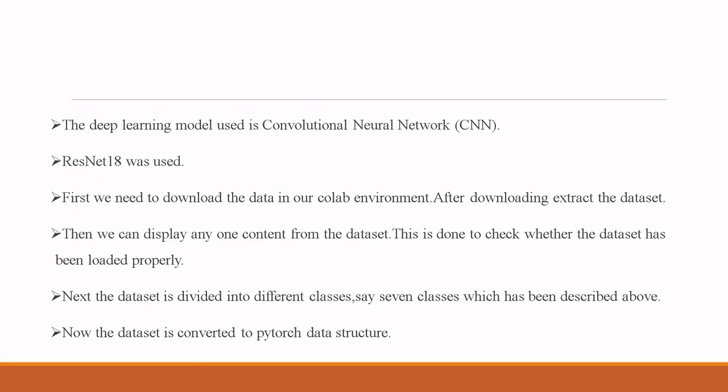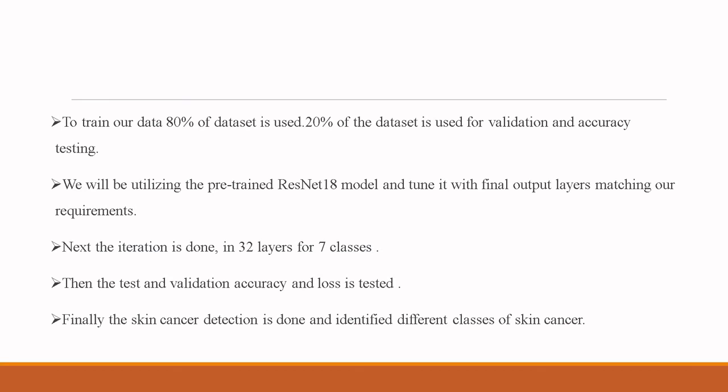The deep learning model uses CNN and ResNet-18. First, we download and extract the dataset in the Colab environment, then display a sample image to verify the dataset loaded correctly. The dataset is divided into the seven classes described earlier and converted to a PyTorch dataset. 80% of the data is used for training and 20% for validation and accuracy testing. The pre-trained ResNet-18 model is fine-tuned with final output layers matching our requirements. Iterations are done with 32 batches for seven classes, and test and validation accuracy and loss are measured.